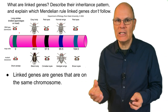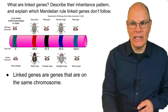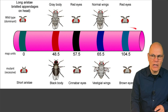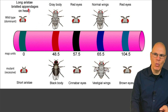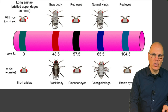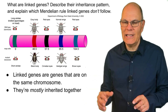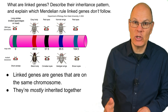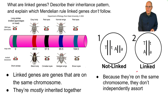Fruit flies, as opposed to peas, were the widely used experimental organism to discover the principles of non-Mendelian genetics. Here you can see one chromosome from a fruit fly with a variety of genes — sequences of DNA that code for specific traits — located on the same chromosome. These include genes for bristled appendages, body color, eye color, and wing length. These genes are mostly inherited together, which is different from the independent assortment we saw with Mendelian genetics. Because they're on the same chromosome, these genes don't independently assort.